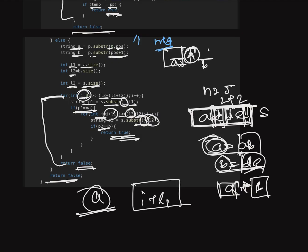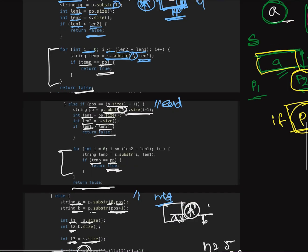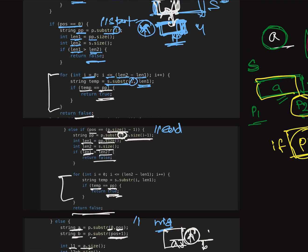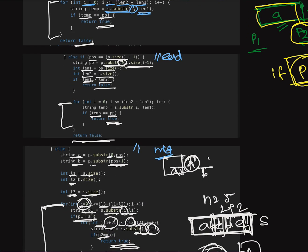Try to understand the logic position-wise: how to match when the star is at the front, at the end, and in the middle. If you like the explanation, please like the video. If you haven't subscribed yet, please subscribe to the channel. If you have any comments or suggestions, you can comment below. Thank you, bye.